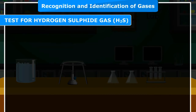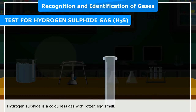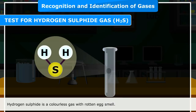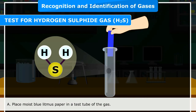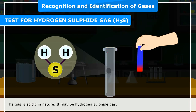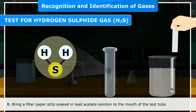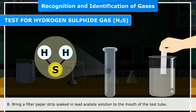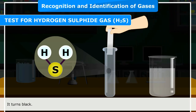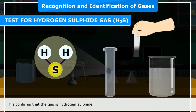Test for hydrogen sulfide gas (H₂S): Hydrogen sulfide is a colorless gas with a rotten egg smell. Confirmatory test A: Place moist blue litmus paper in the gas — it turns red, indicating the gas is acidic. Confirmatory test B: Bring a filter paper strip soaked in lead acetate solution to the mouth of the test tube — it turns black. This confirms that the gas is hydrogen sulfide.